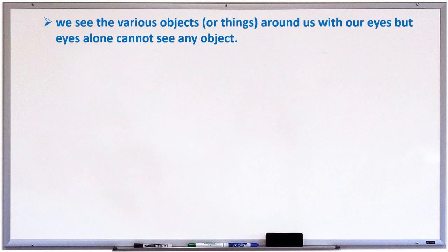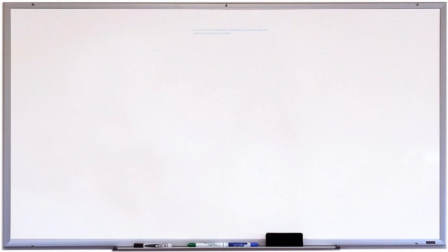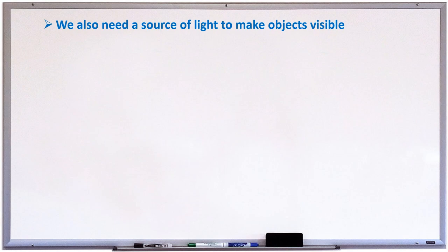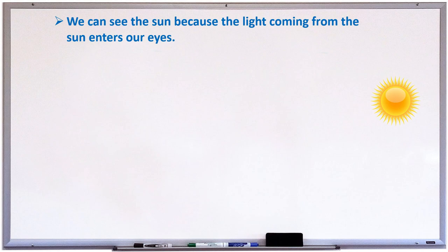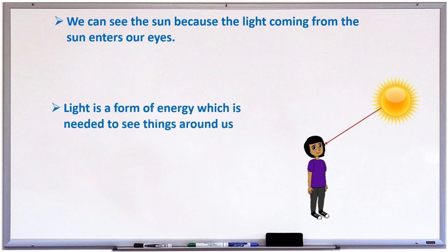We see the various objects or things around us with our eyes, but eyes alone cannot see any object. We also need a source of light to make objects visible. What do you mean by source of light? We can see the sun because light coming from the sun enters our eyes. Light is a form of energy, which is needed to see the things around us.